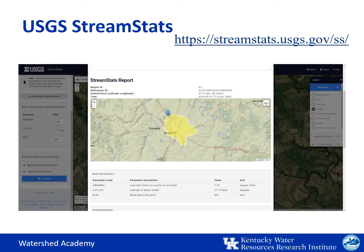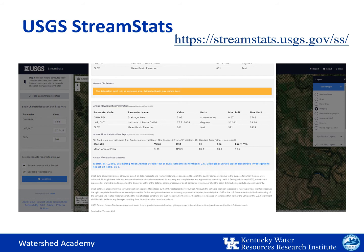Here is the report that's generated, which can then be downloaded and saved. You can see that it shows the map of the drainage area and provides the basin characteristics as well as any other information you requested. Scrolling down, you can see the box highlighted in orange that notes this area as possibly having karst geology, which may affect how accurate the watershed delineation is. You'll also see some flow data and information about how it was used to calculate flow statistics.